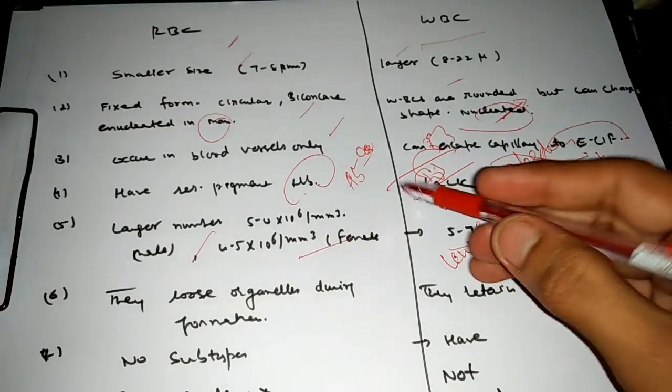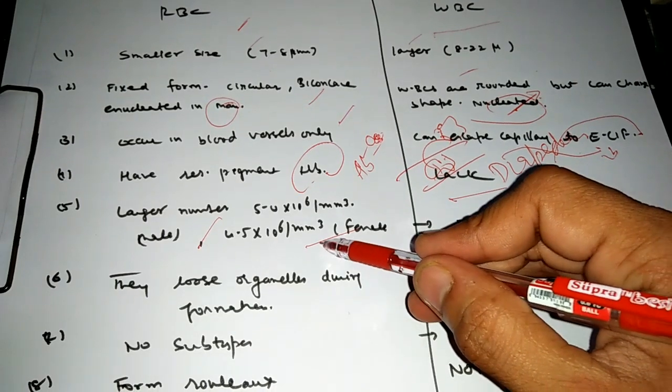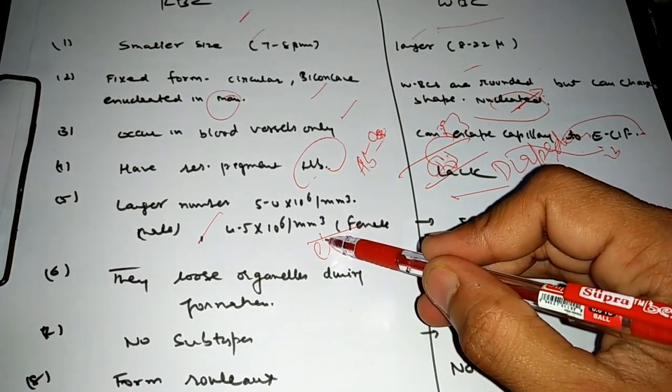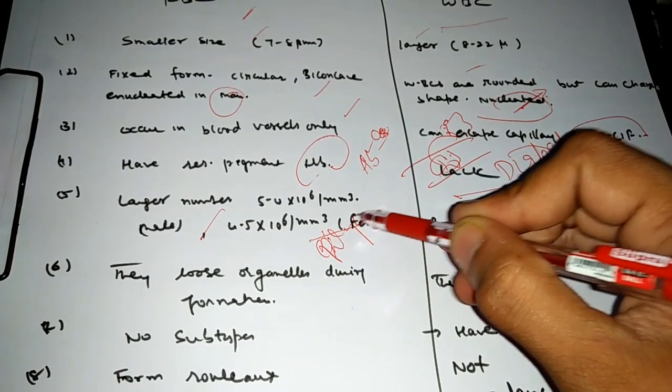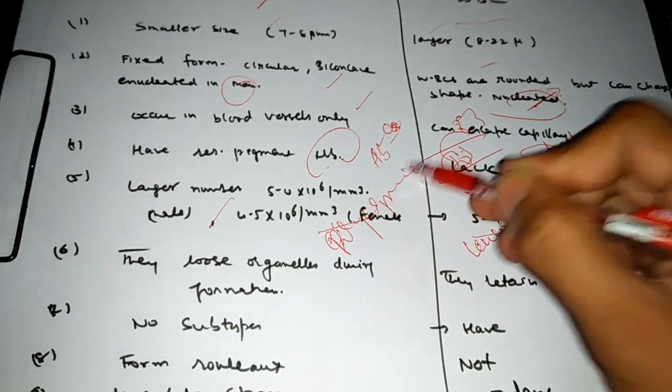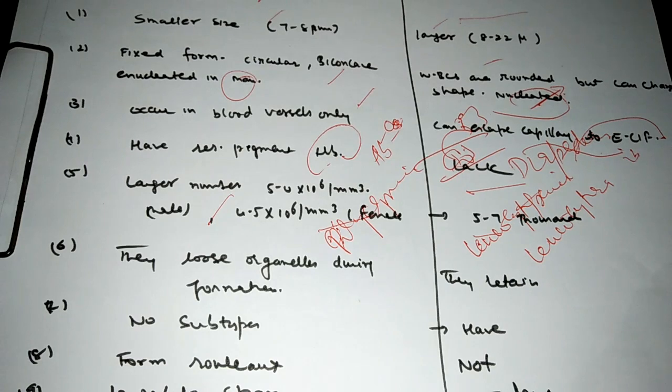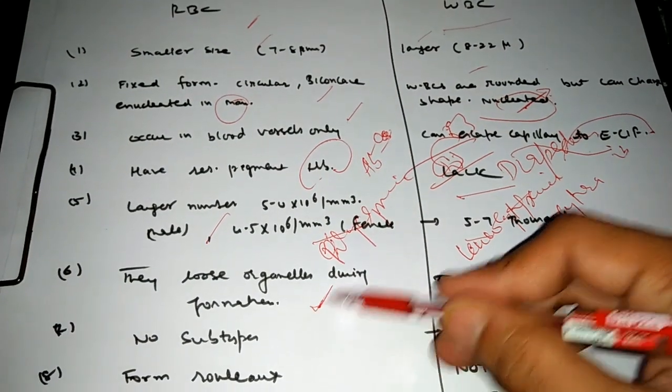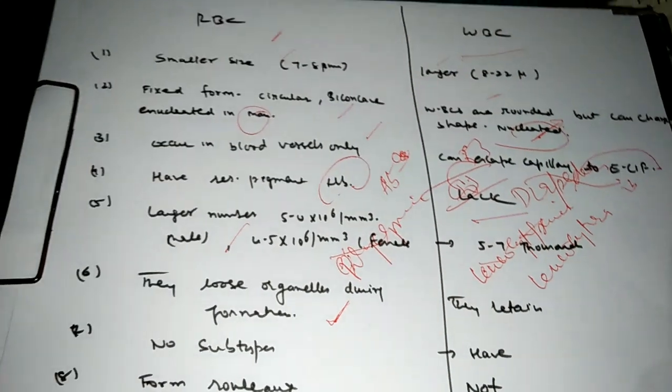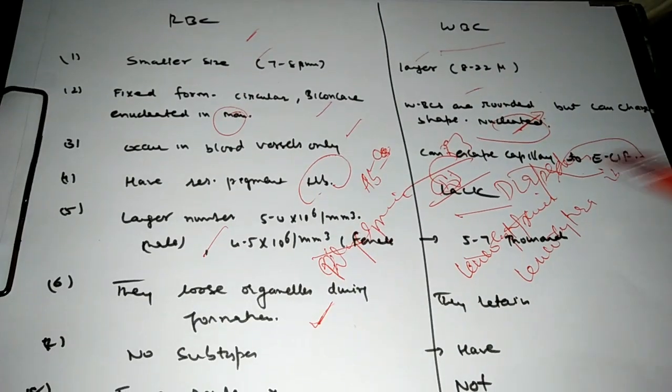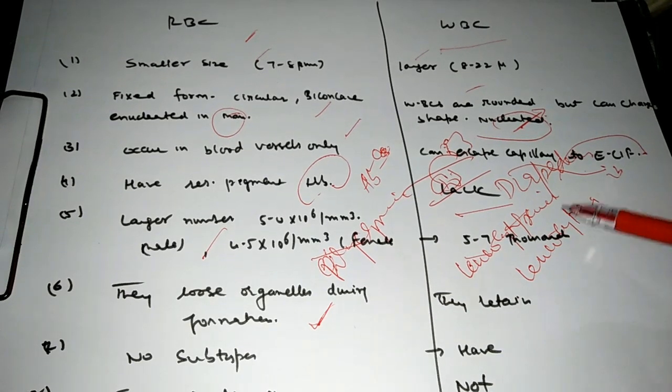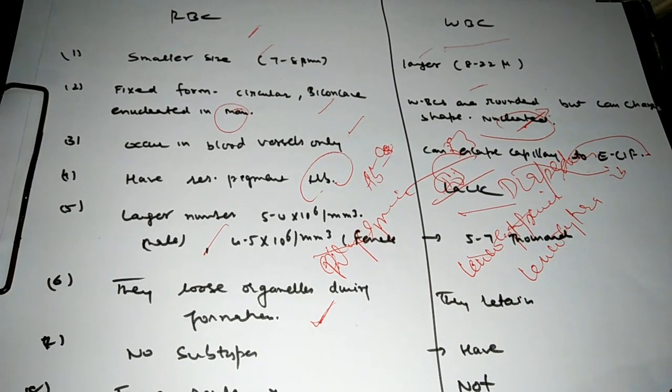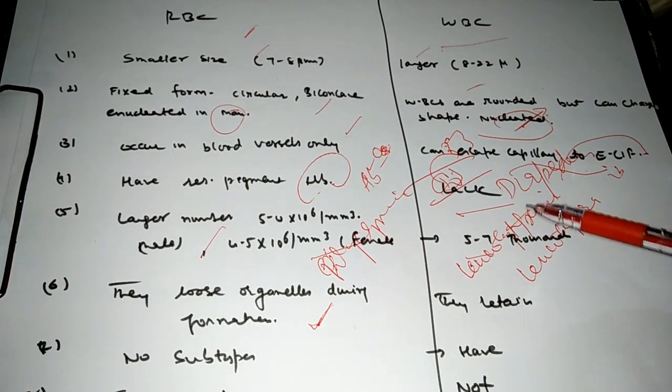Next is that they lose organelles during formation. The precursor or progenitor cell of the RBC have organelles but when they are advanced they lack all organelles, non-functional nucleus.